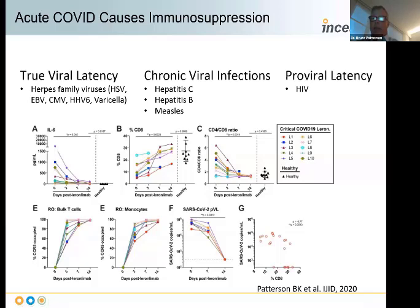As we've seen over the years after we first described this immunosuppression, there is reactivation of the chronic herpes family viruses in those who had EBV, CMV, herpes simplex, and HHV-6. The other thing we noticed, which has become really prevalent as we look deeper into these patients with long COVID, is chronic Lyme.